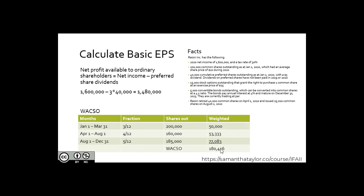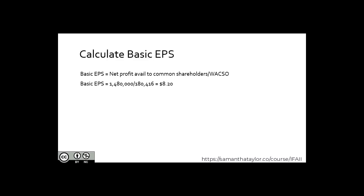Right before I use this number, I do a sober second thought. I take a step back: we started the year at 200,000, took some away, and added some back. If I ended the year at 185,000, does 180,416 feel right? If this number came in above 200,000, probably not. If it came in at 160,000, again, probably not. So it's always nice to sanity-check your own calculations. Our basic EPS is equal to our numerator divided by our denominator, and our basic EPS — our starting point for diluted EPS — is $8.20.